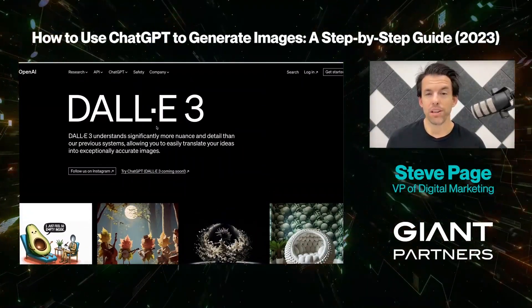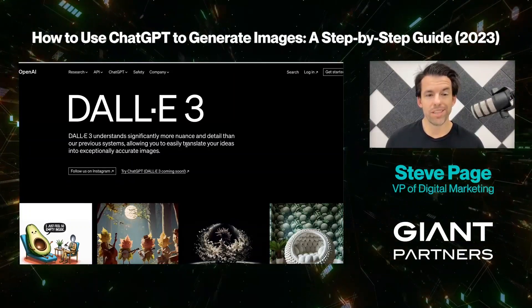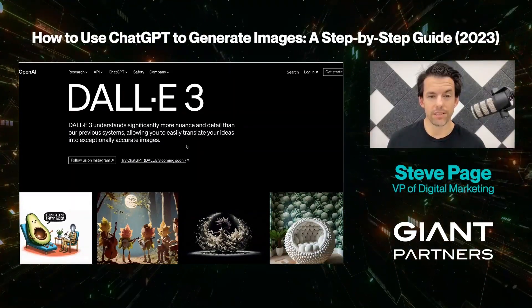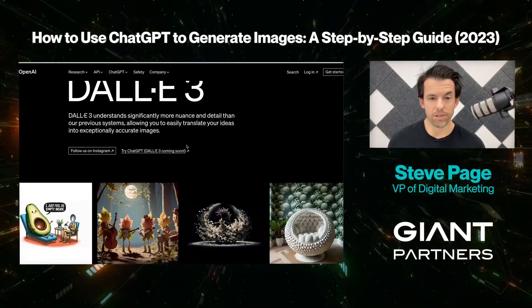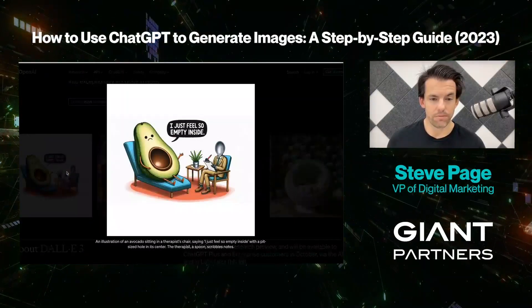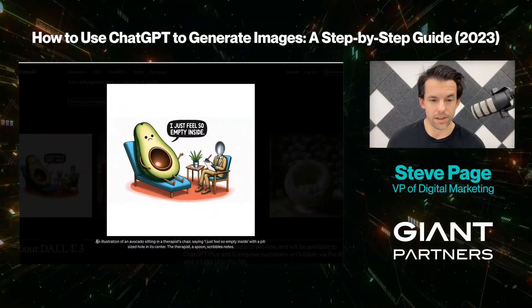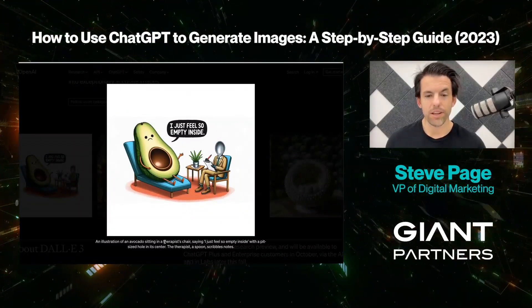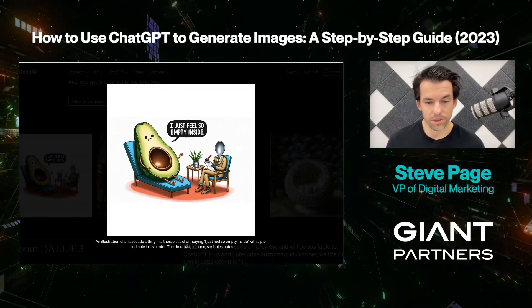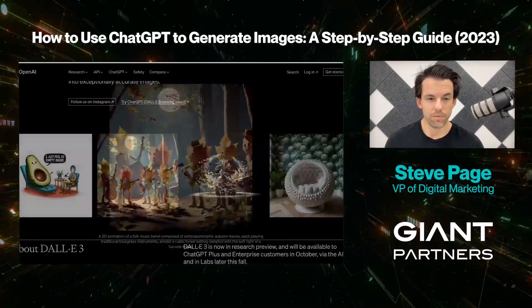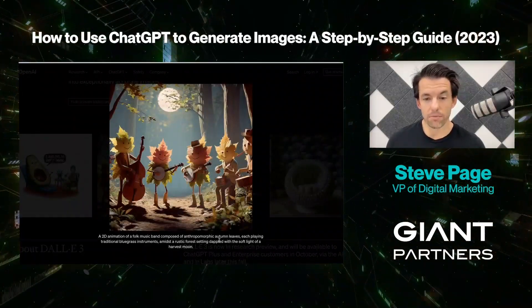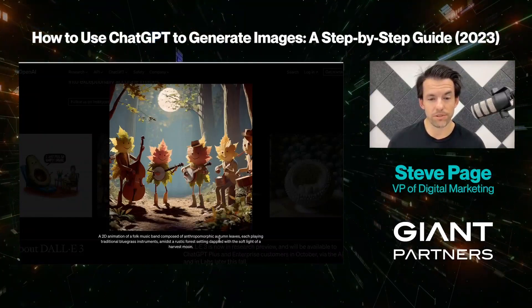So what is DALL-E 3? DALL-E 3 understands significantly more nuance and detail than their previous systems, allowing you to easily translate your ideas into exceptional, accurate images. You can see some images people generated. Here's some prompts they added — for example, an illustration of an avocado sitting in a therapist's chair saying 'I just feel so empty inside' with a pit-sized hole in its center.